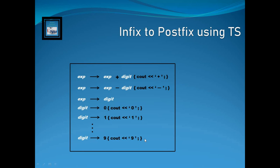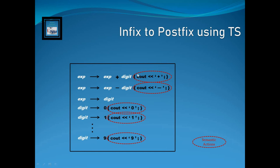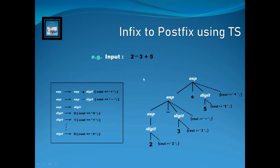If we ignore the semantic actions embedded within the right sides of productions, the translation scheme is just a simple grammar. But the difference is that within the translation scheme, semantic actions are explicitly written within the right sides of productions. These semantic actions are program fragments — output statements in C++ — that output tokens at particular positions, explicitly showing the order of evaluation.